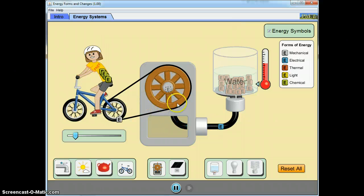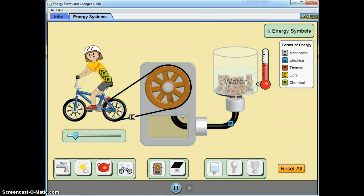That mechanical energy then is transferred to the wheel, and this energy then is transformed into electrical energy, and lastly, to thermal energy. So here's just some examples of how energy can be transformed and transferred.